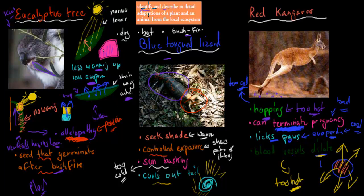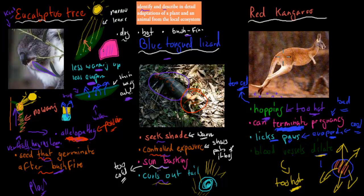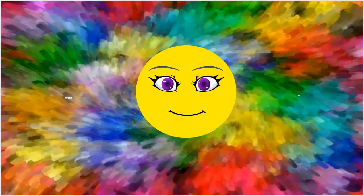To recap: we need to identify and describe adaptations. For the eucalyptus tree we have narrow leaves, thin waxy cuticle, vertically hanging leaves, allelopathy, and seeds that germinate after bushfire. For the blue-tongued lizard: seeking shade, controlled exposure, sun basking, and curling its tail. For the red kangaroo: hopping for temperature regulation, terminating pregnancy, licking paws, and blood vessel dilation. Make sure to remember any additional examples from class and be able to describe why each adaptation is beneficial.